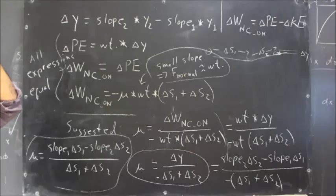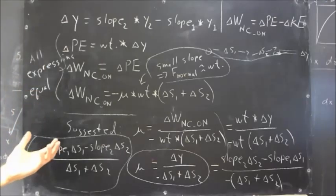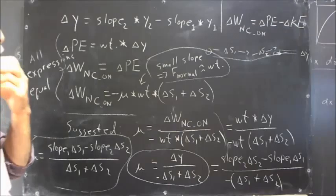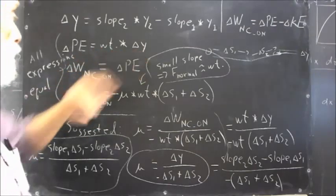Now, ask what's the change in potential energy? The expression for the change in potential energy is the weight times delta Y.